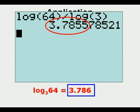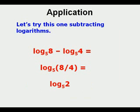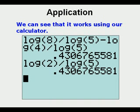Let's try subtracting logarithms. We have log base 5 of 8 minus log base 5 of 4, which equals log base 5 of 8 divided by 4 — the quotient of 8 and 4 — so that's log base 5 of 2. We can verify using our calculator: log 8 divided by log 5 minus log 4 divided by log 5 gives the same result as log 2 over log 5, confirming the calculation.